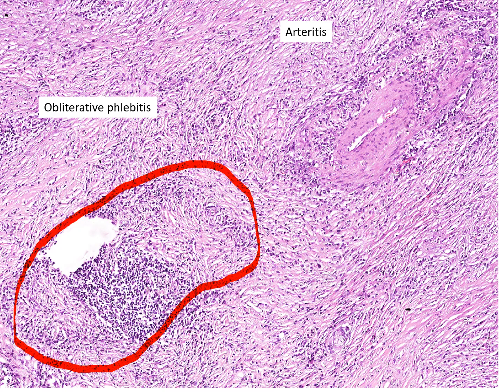In this particular case, there's also a focus of arteritis. In fact, you may see obliterative arteritis, particularly in the pancreas.